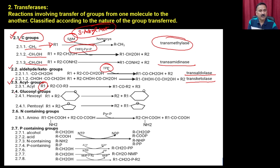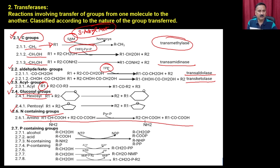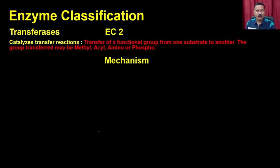EC2.3 are acyl group transferases. EC2.4 are glycosyl transferases acting on hexosyl groups. EC2.6 transfers nitrogen-containing groups onto new molecules. EC2.7 is the phosphorus-containing group class, transferring phosphorus from one molecule to another. Now, regarding mechanism — the mechanism is very complex, so we will take the kinase as an example.